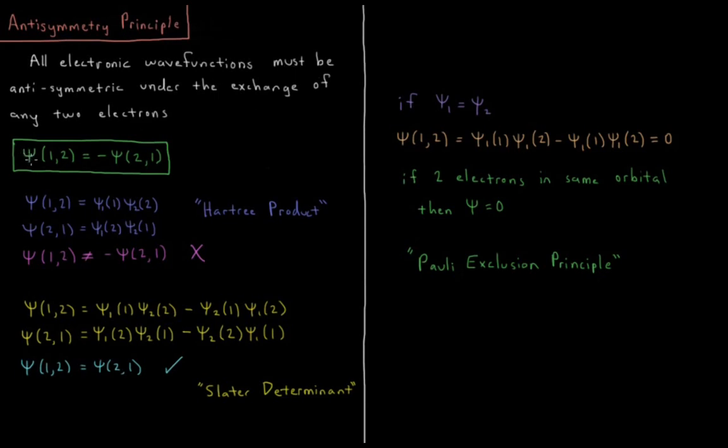This means if we have a wave function which depends on two electrons, Psi1 and Psi2, or electron1 and electron2, if we switch the labels—if we take everywhere we have electron1, make that electron2, and everywhere we have electron2, make that electron1—so that simulates the exchange of two electrons, then when we do that, it should equal our original wave function times a minus sign.